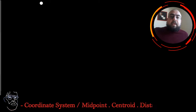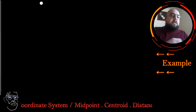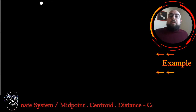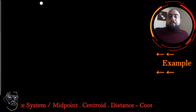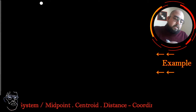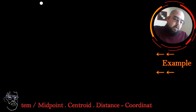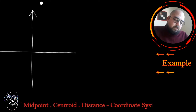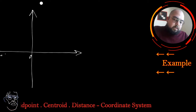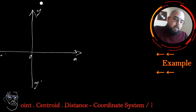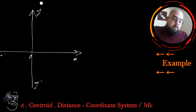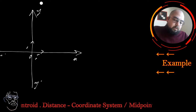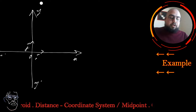I will start with an example directly, and with this example you're going to understand how to find a midpoint, centroid, and even the distance between a couple of points. This is our coordinate system O, I, J — I'm going to choose an orthonormal system. This is X prime OX, Y prime OY, and the unit vectors are I and J.